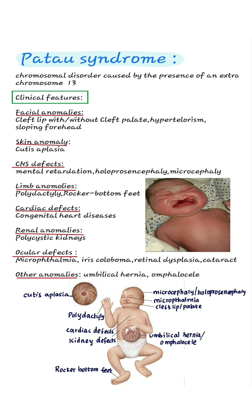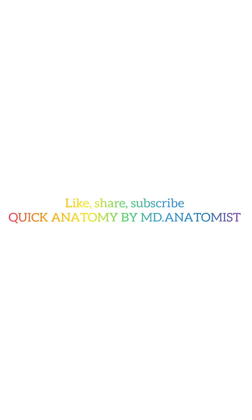Other anomalies include umbilical hernia and omphalocele. Omphalocele is due to a congenital defect in the abdominal wall, where intestines herniate through the umbilicus.